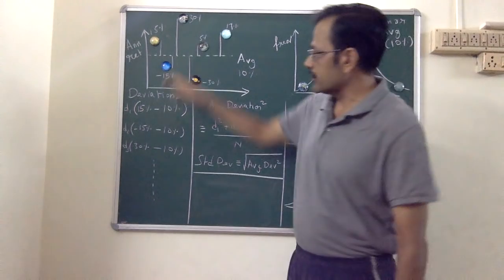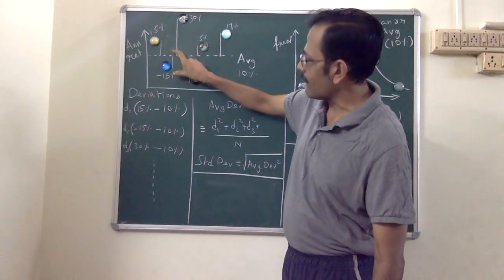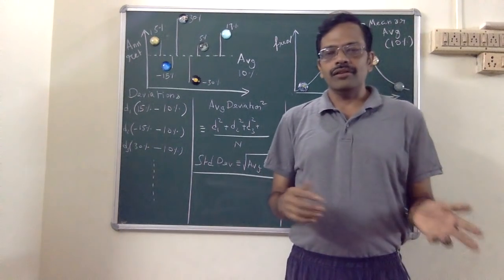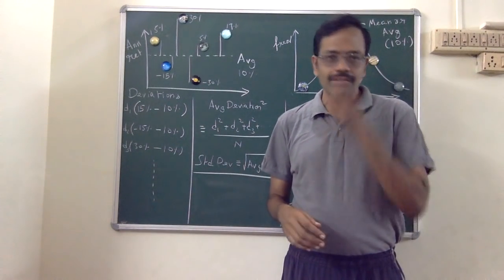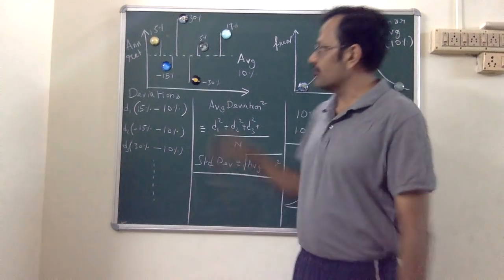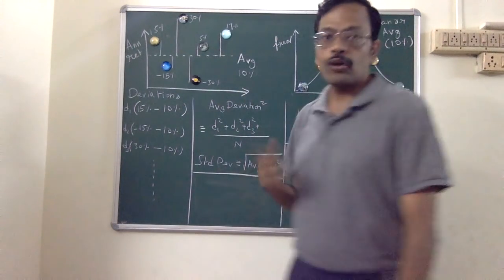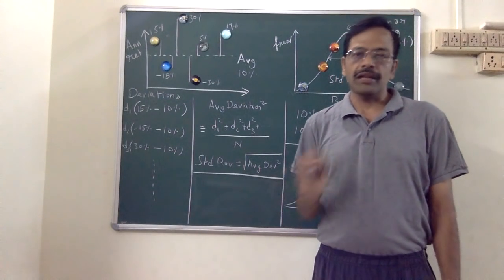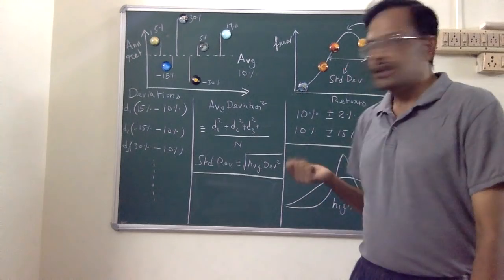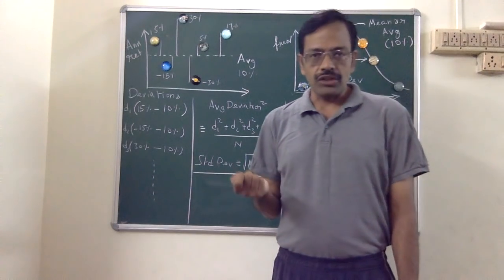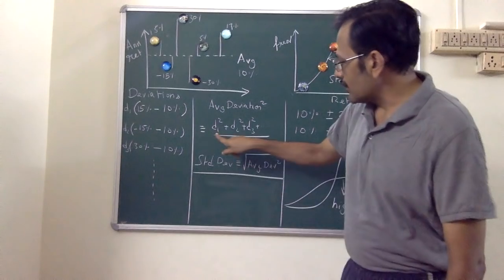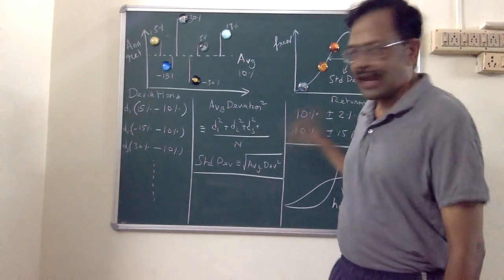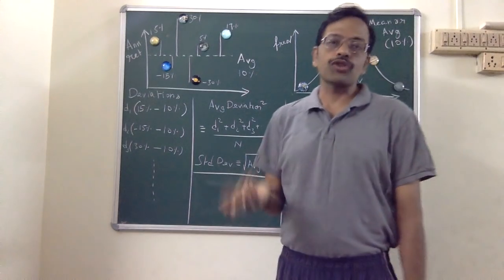Notice that some deviations are positive and some are negative. We do not want to take the sum of positive and negative deviations — that's messy because the average itself is the sum of positive and negative returns. So what we do is square the deviations. We take the average of D1 squared plus D2 squared plus D3 squared plus D4 squared, and so on, divided by n. That is the average of the deviations squared.